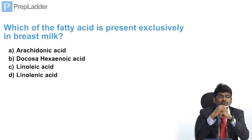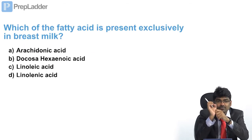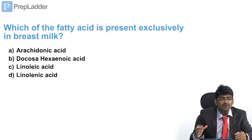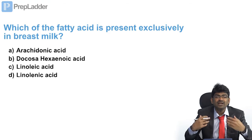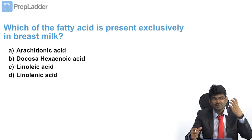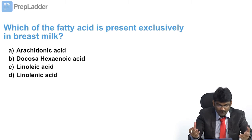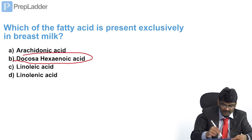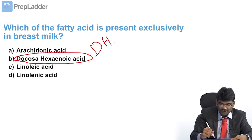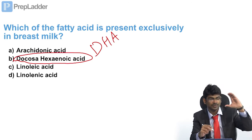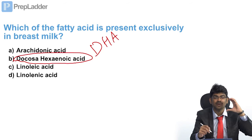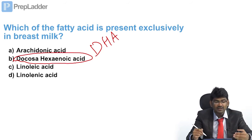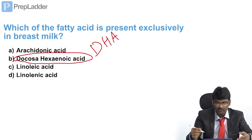Which of the following fatty acids is present exclusively in breast milk? That is why exclusive breastfeeding is important for brain growth in children. Docosahexaenoic acid (DHA) is the answer. In TV advertisements, formula manufacturers claim their product contains DHA important for brain growth, as it is present in breast milk.